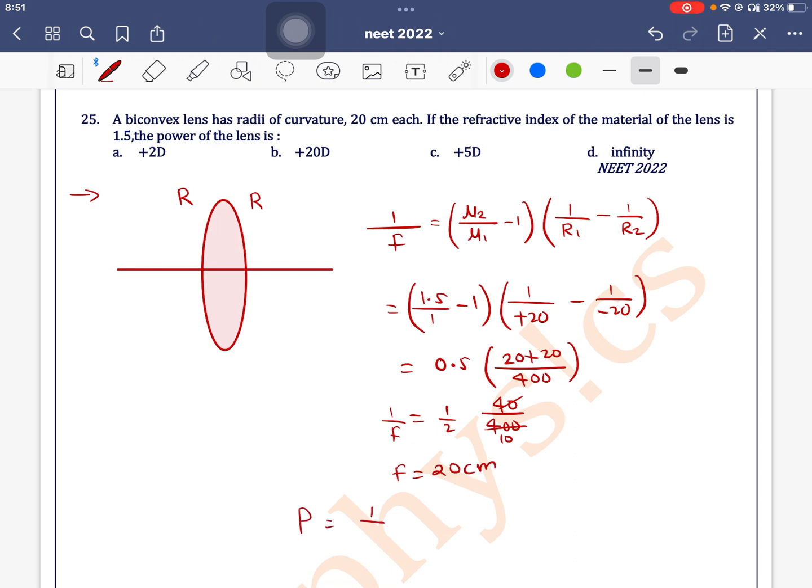Now, power is equal to 1 by f and f should be in meters. So 1 by 20 into 10 to the power minus 2, this is equal to 100 by 20 is equal to 5 and unit is d. So 5 diopter, option c is the correct one.